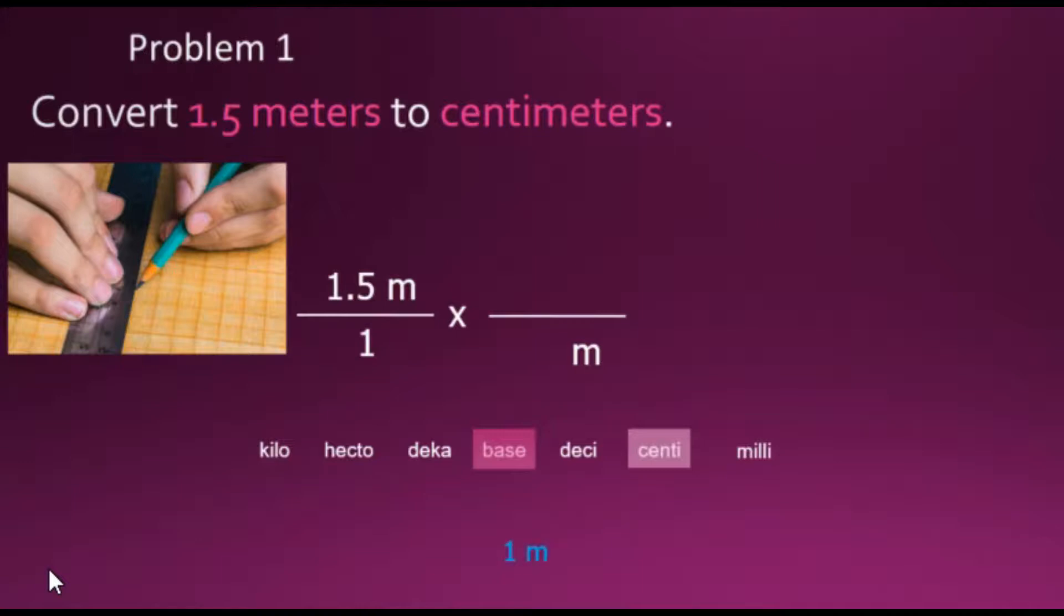The other number in the conversion factor is determined by counting the number of spaces between the two measurements. Each space is a multiple of 10. Note there are two spaces between base and centi, each representing a power of 10. The missing conversion factor number then is found by multiplying 10 by 10, or 100. Thus, we have equivalent values.